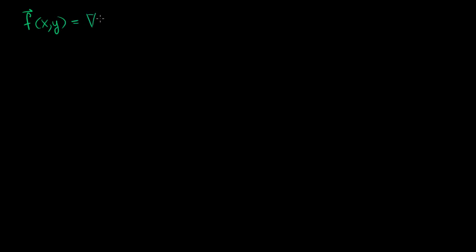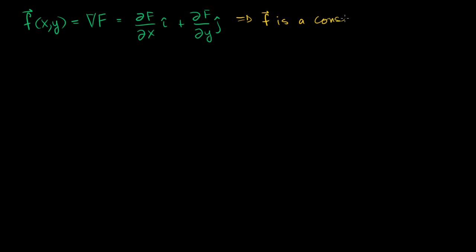In the last video, we saw that if a vector field can be written as the gradient of a scalar field — that is, equal to the partial of F with respect to x times i, plus the partial of F with respect to y times j — then we call it conservative. So that tells us that F is a conservative vector field.